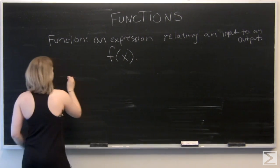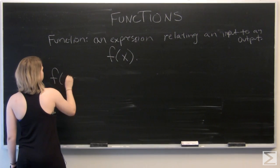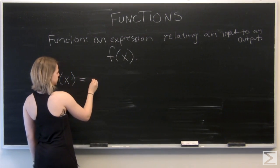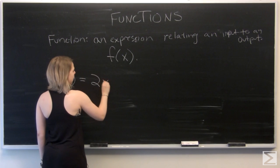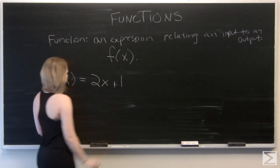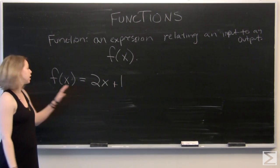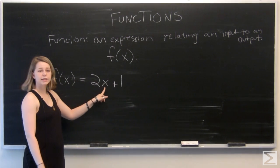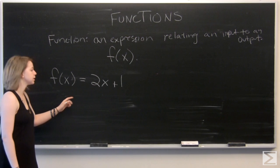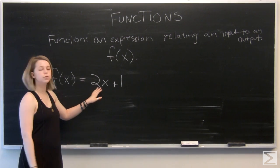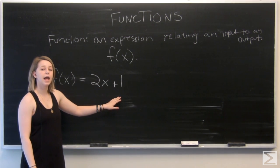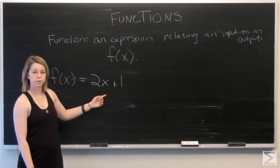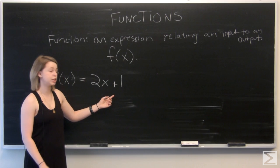So let's look at an example. We've got f of x is equal to, let's say, 2x plus 1. So we've got our equation here, and our function f of x relates x to an output. We've got 2 times x plus 1, and whatever we put in for x, our output is going to be the result when we place x into this equation.